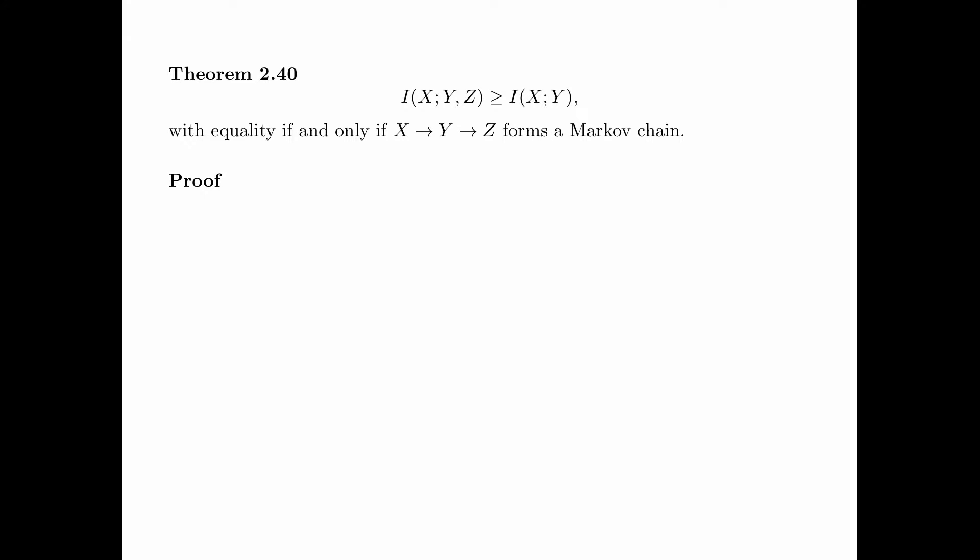Theorem 2.40 says that the mutual information between X and (Y, Z) is greater than or equal to the mutual information between X and Y, with equality if and only if X, Y, Z forms a Markov chain.